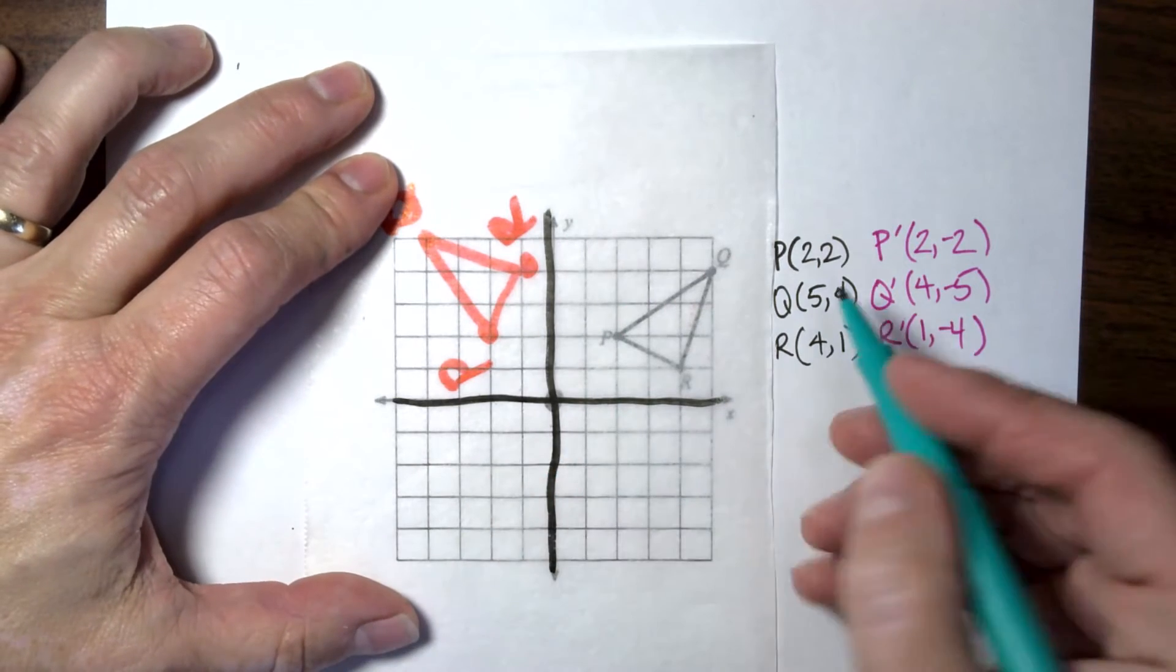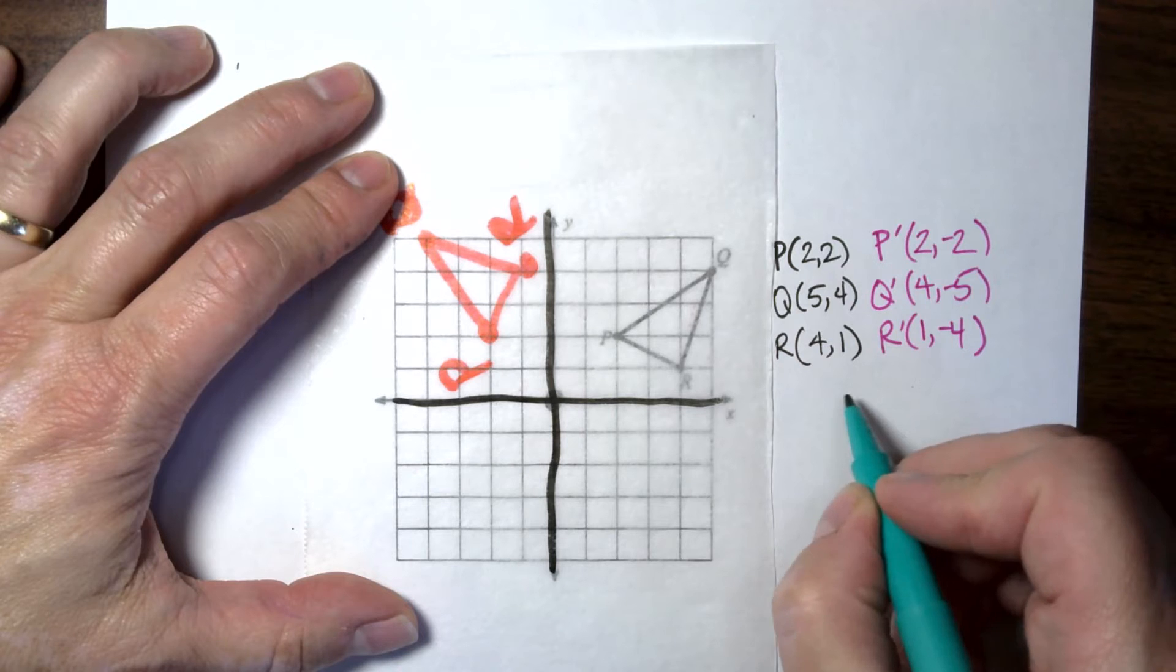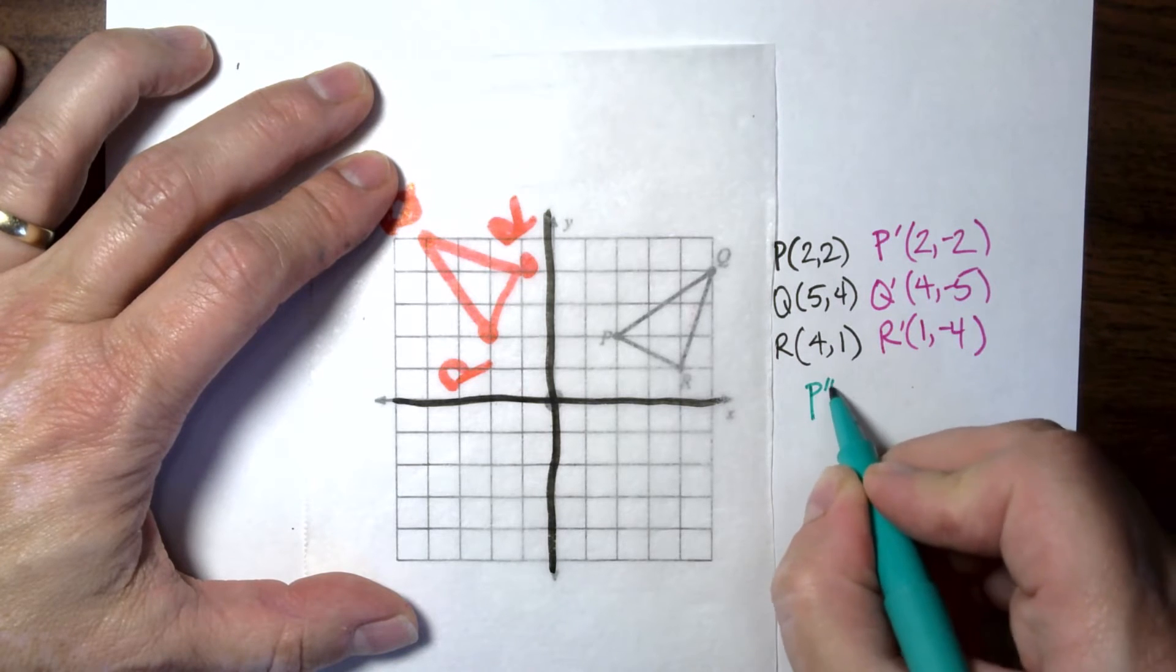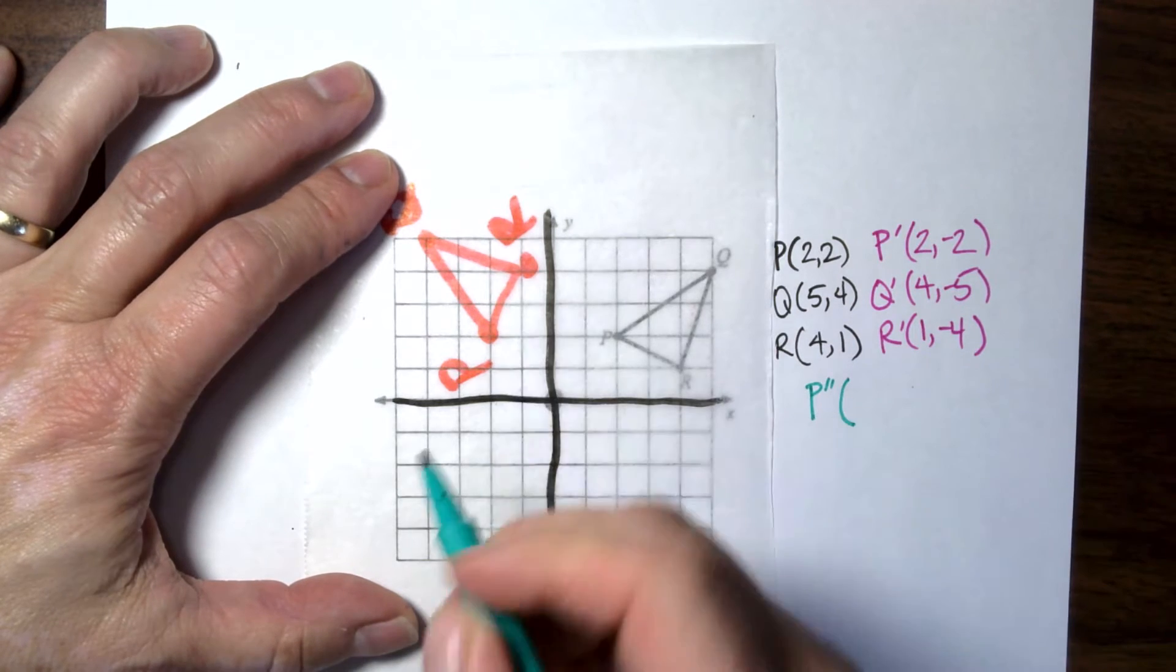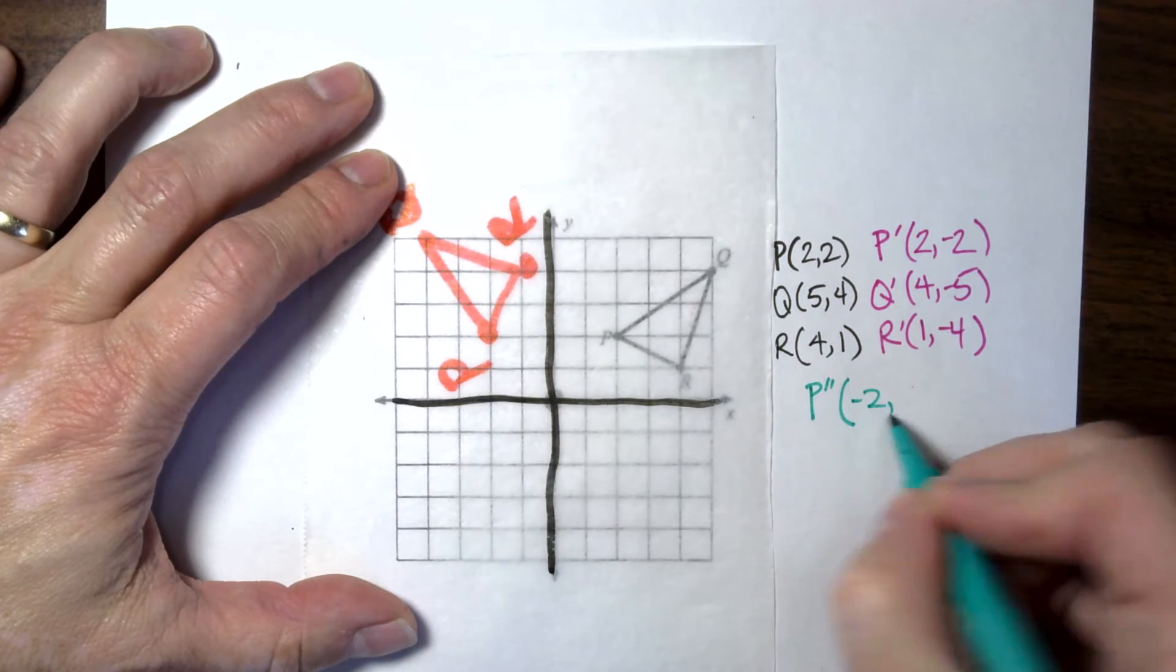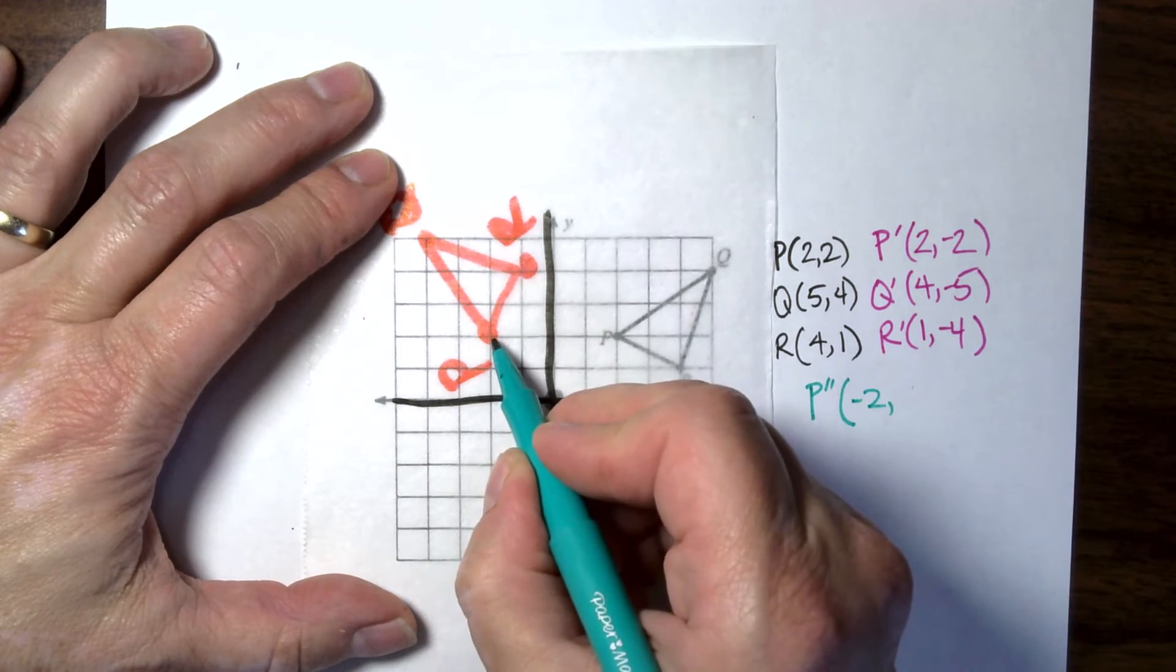And you can see where those points would line up. So there's my new P. So instead of it be P prime, indulge me, I'm just going to call it P double prime. And we end up with negative 2 and y is positive 2.